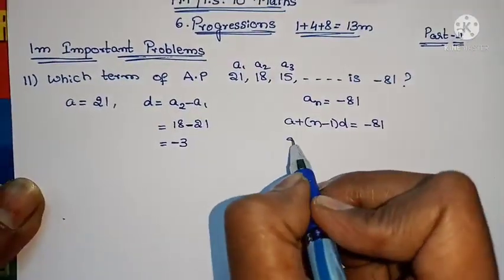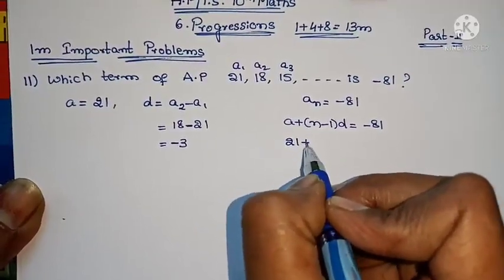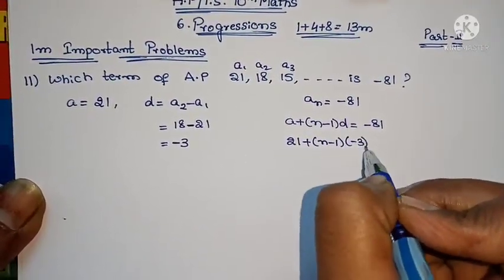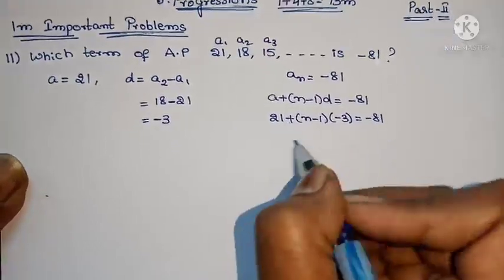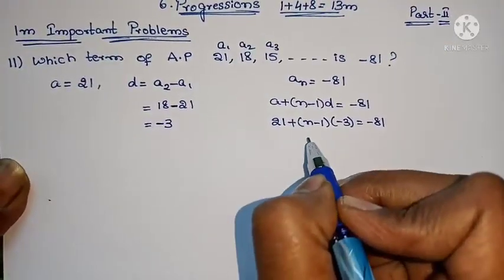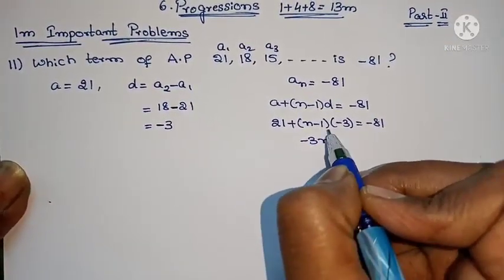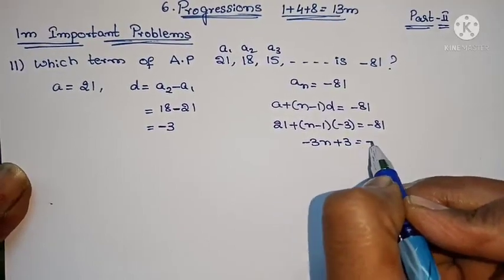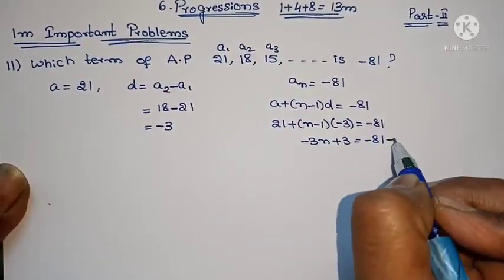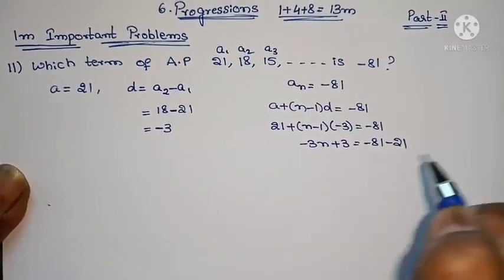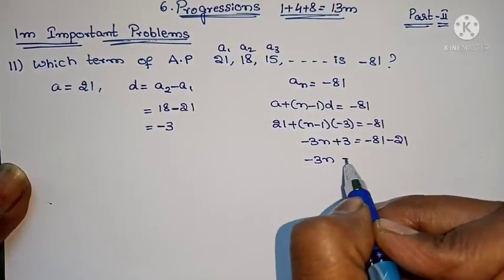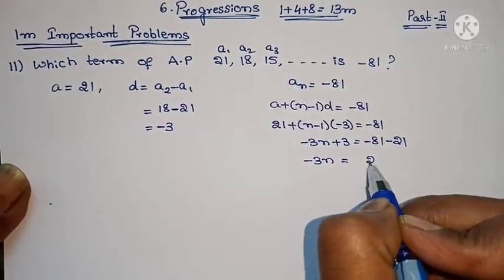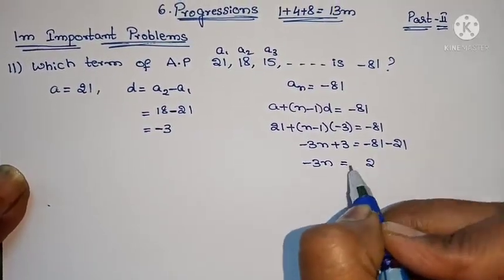So: -81 equals 21 plus (n-1) into (-3). Multiplying out: -3n minus (-3) plus 3, equals -81. Moving 21 to the other side gives minus 21. -3n equals... adding: 1 plus 1 is 2, 8, 9, 10.